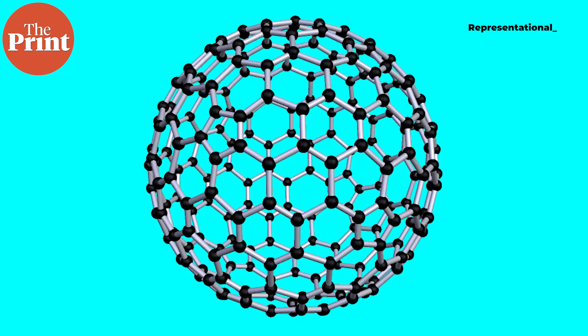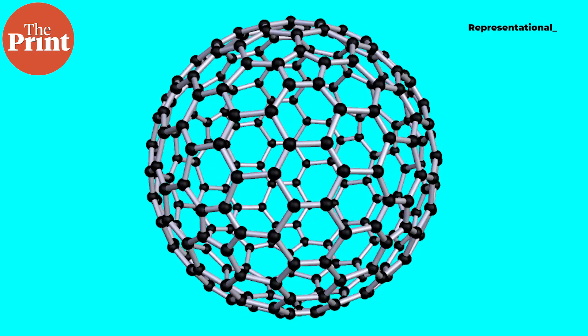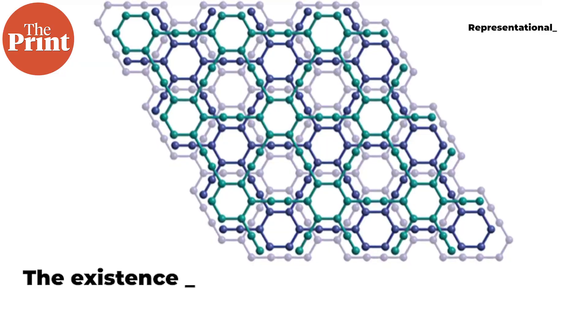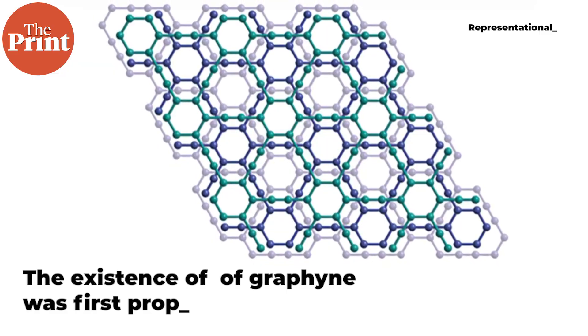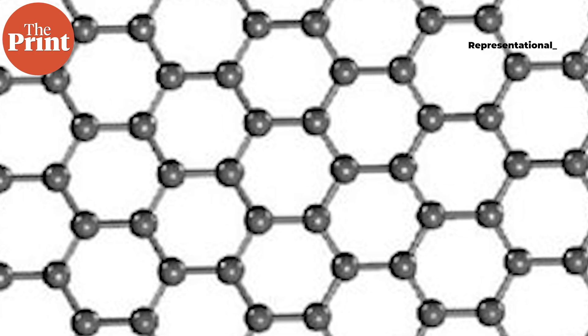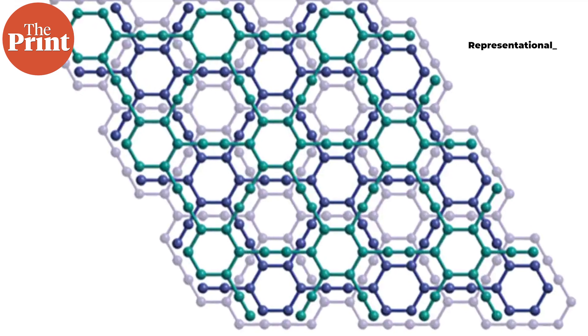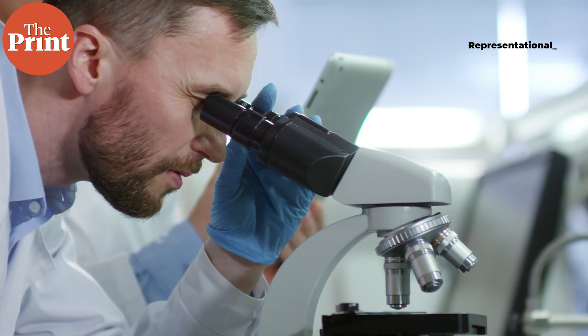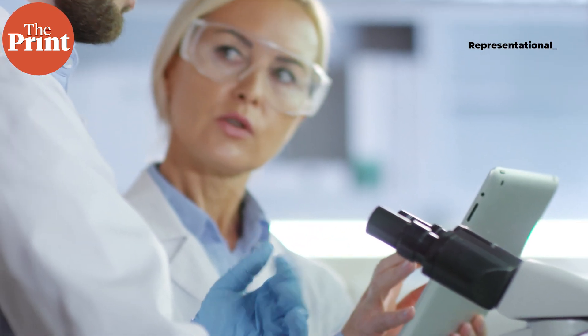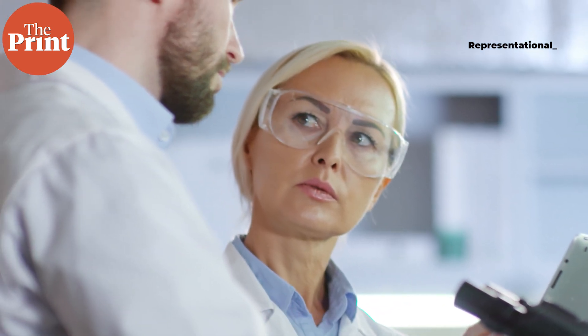Diamonds and graphite are known as allotropes of carbon. Carbon has several allotropes, including fullerenes, whose discovery won the Nobel Prize in chemistry in 1996. The existence of graphyne was first proposed in 1960. Like graphene, graphyne is also composed of layers of carbon atoms. But unlike graphene, where all the atoms are arranged in hexagons, graphyne has additional carbon atoms connecting the hexagonal rings. However, despite decades of work and theorizing, only a few fragments have ever been created before.